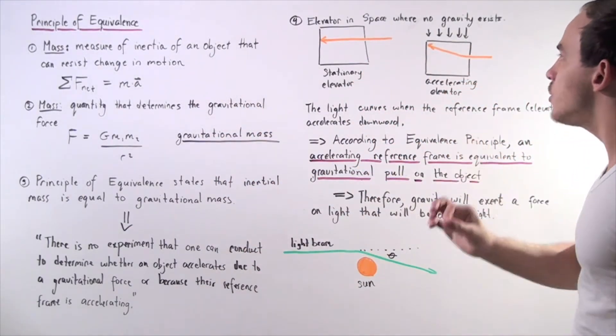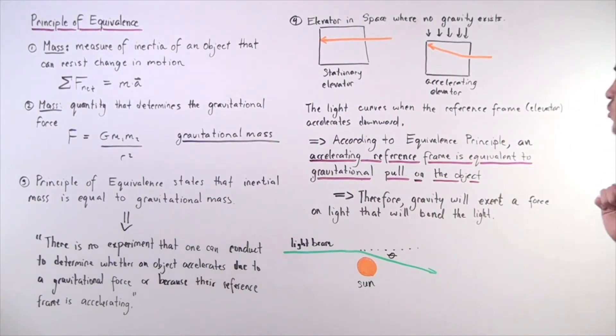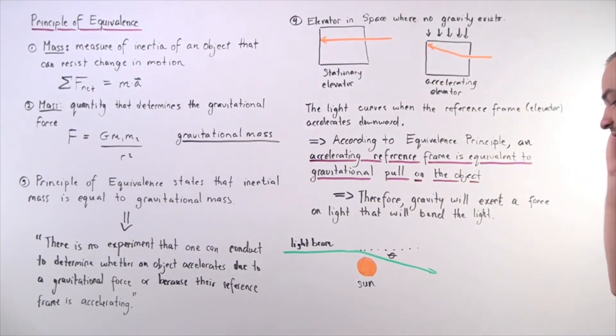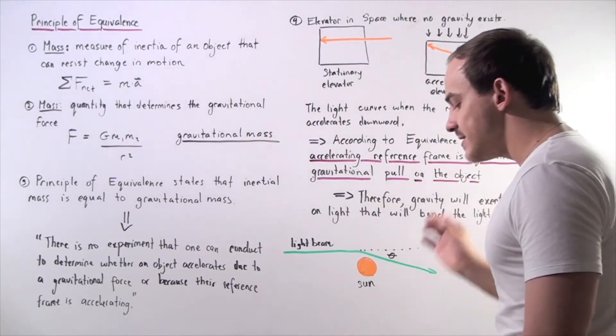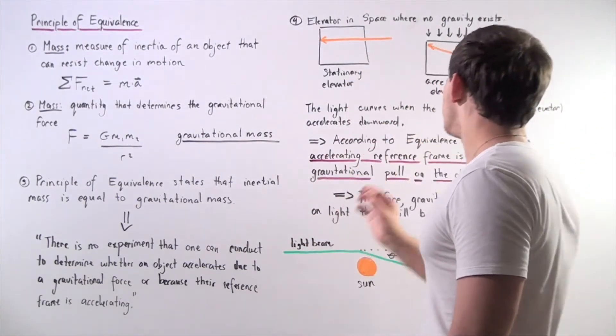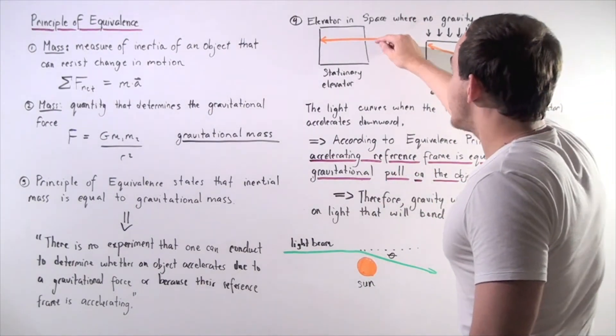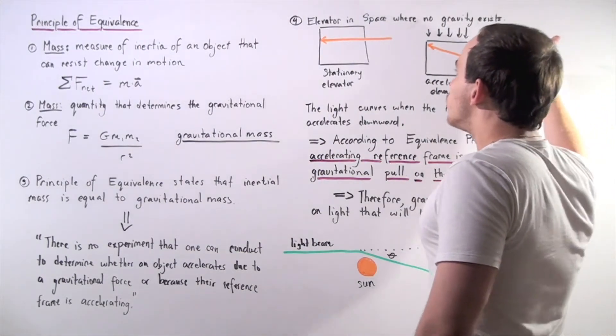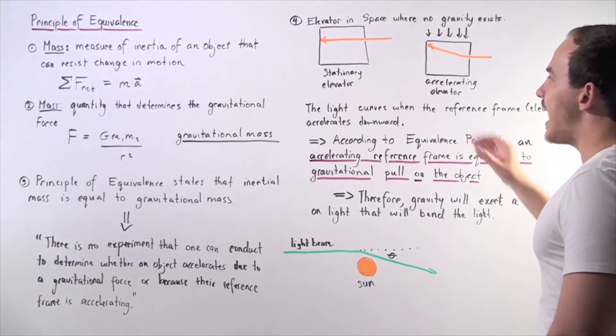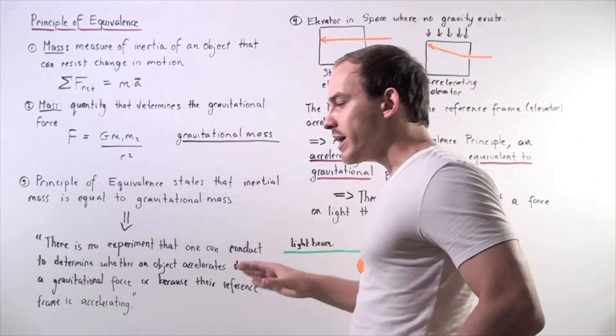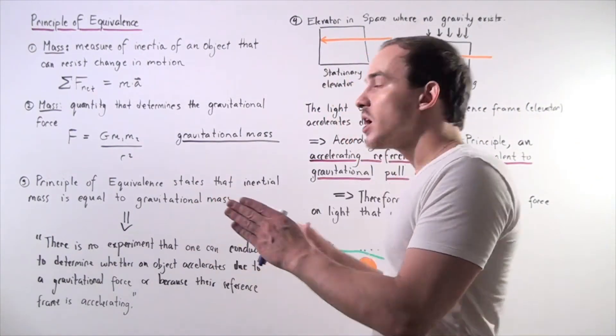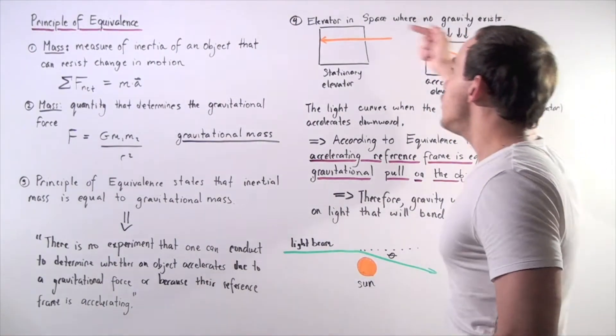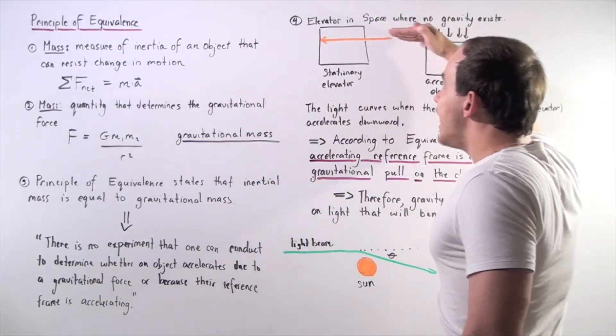So let's look at another thought experiment. Let's suppose we take an elevator and we bring an elevator somewhere far into space where gravity does not exist or gravity is negligible. So let's suppose we make a small little incision in the elevator and a light beam goes into the stationary elevator. So the elevator is not accelerating, it's staying in one place. Well, if the light beam goes in one side, it will go directly to the other side. So it will travel in a straight path.